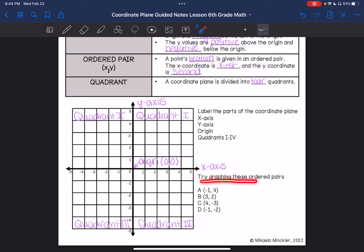Alright, next we are going to try graphing these ordered pairs. So a is at negative one, four. We need to remember that x is the number that is first. And then its y location is the number that is second. So we are going to go over to negative one on the x-axis and up to positive four on the y-axis. So this is where my point is going to go.